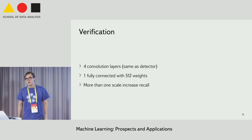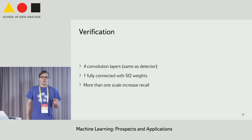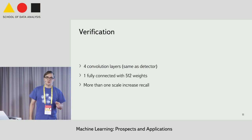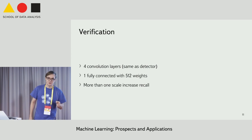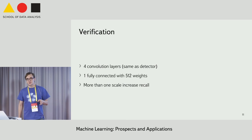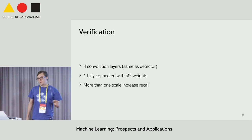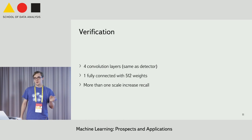What about the second stage? For verification, we use a similar network. The only difference is a fully connected layer consisting of 512 weights.